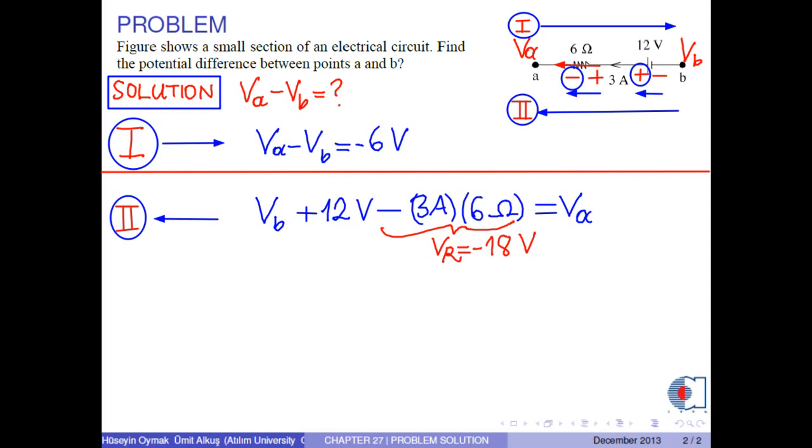Vb can be taken to the right hand side to obtain Va minus Vb on the right hand side. On the left hand side, we have 12 volts minus 18 volts. As a result, we obtain the potential difference between points A and B as negative 6 volts.